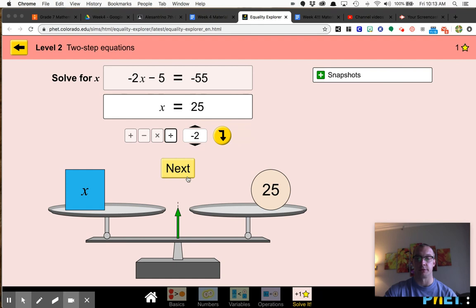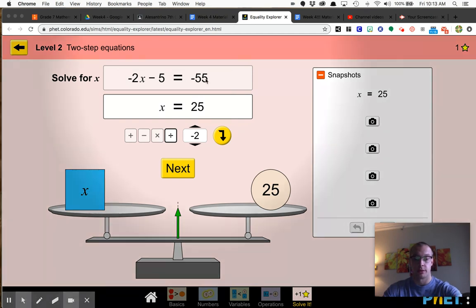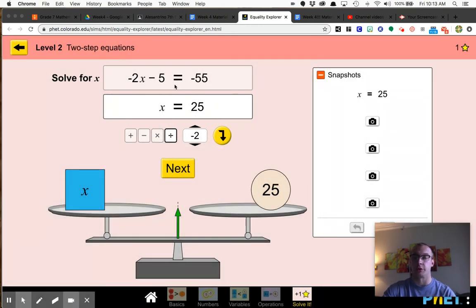That is my solution there. If you'd like to add a snapshot, you can do that. And then you can take a screenshot of this and upload it onto your Google Doc. Or you can type these equations. So this is the equation, and then this is your solution. You could just type these two things back on your Google Doc as well.